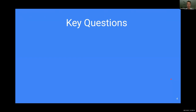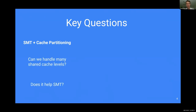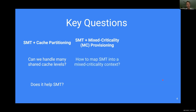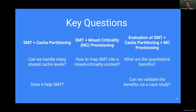This raises several key questions. First, how do we combine SMT and cache partitioning — specifically, how do we handle many shared cache levels, and does adding cache partitioning change the SMT benefits found in prior work? Second, when we combine SMT and mixed criticality provisioning, at what levels do we want to use SMT and how does it map into a mixed criticality context? Finally, when we combine all three — SMT, cache partitioning, and mixed criticality provisioning — do we actually see a quantitative benefit, and can we validate it via a case study?